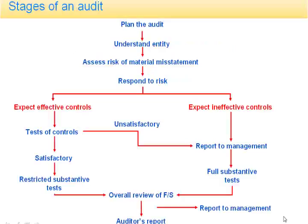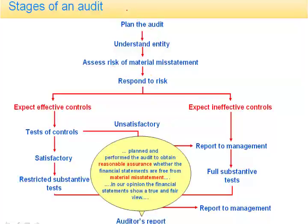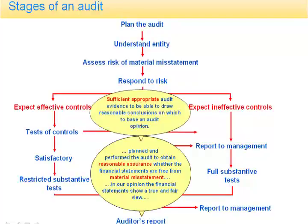This diagram shows the classic stages of an audit. At the start, it is essential that we plan the audit, that we understand the entity, and that we assess the risk of material misstatement and respond to that risk. The primary objective of the audit is to get reasonable assurance that the financial statements are free from material misstatement. A material misstatement is one that would cause a user of the accounts, in particular a shareholder, to change a decision made.